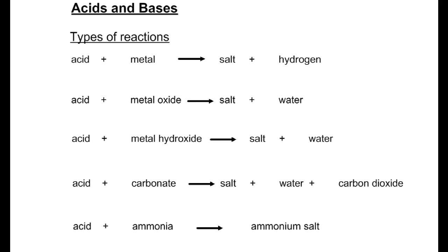Acids have different types of products depending on what they are reacting with. When an acid reacts with a metal, salt plus hydrogen is produced.